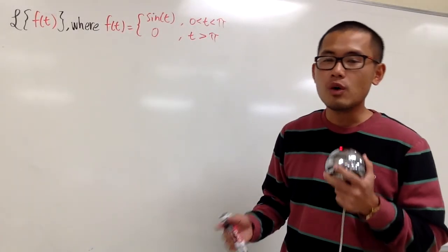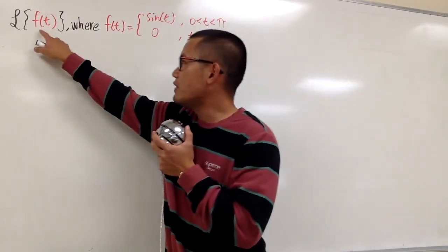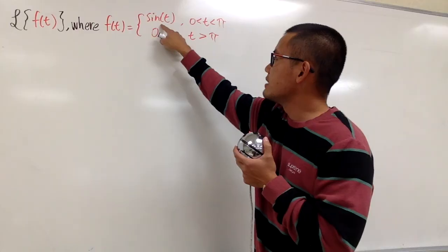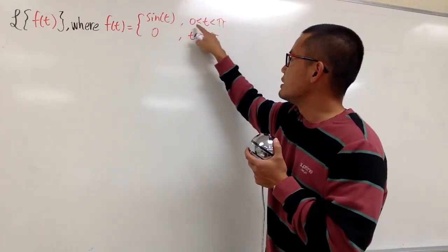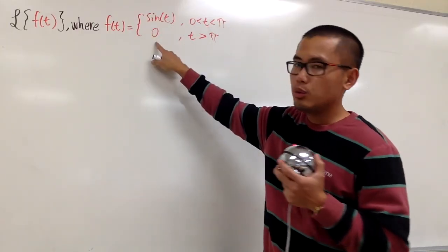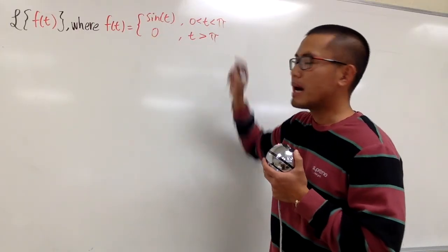We are going to find the Laplace transform of a piecewise function. Here we have f(t), defined as sin(t) when t is between 0 and π, and it will be 0 when t is greater than π.